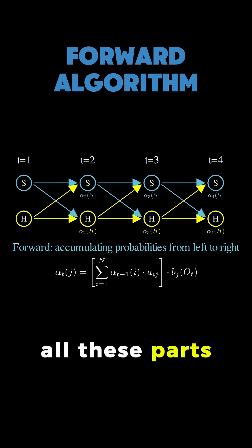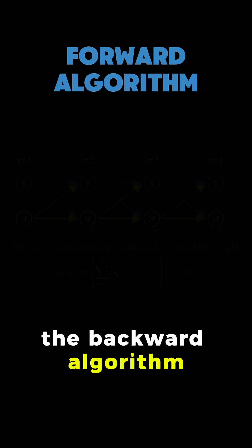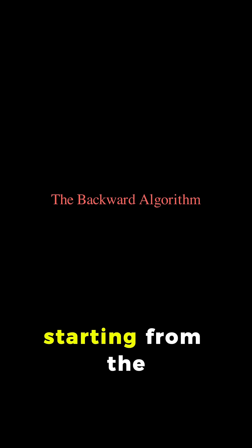The backward algorithm works in the opposite direction, starting from the end and working backwards, computing beta t of i.